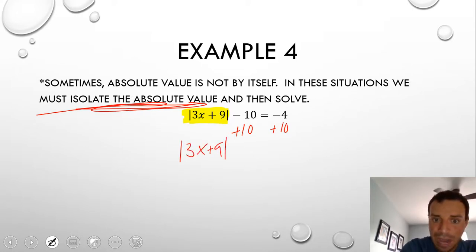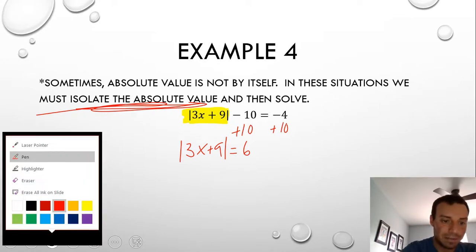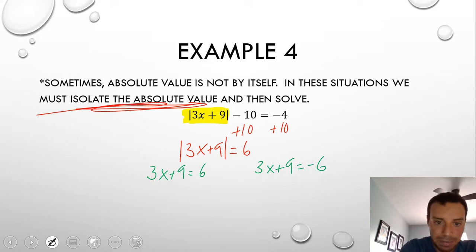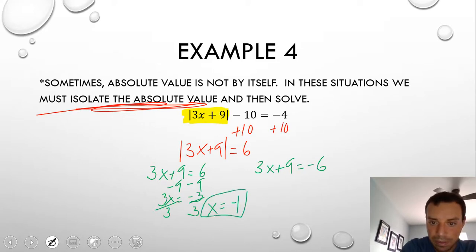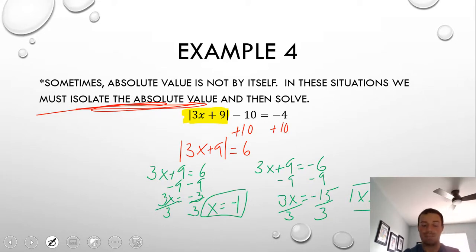Now I can write my two cases: 3x plus 9 equals positive 6, and 3x plus 9 equals negative 6. Solving case 1: subtract 9, then 3x equals negative 3, so x equals negative 1. Solving case 2: subtract 9, then 3x equals negative 15, divide by 3, giving x equals negative 5. You can have negative solutions — the absolute value just can't equal a negative.